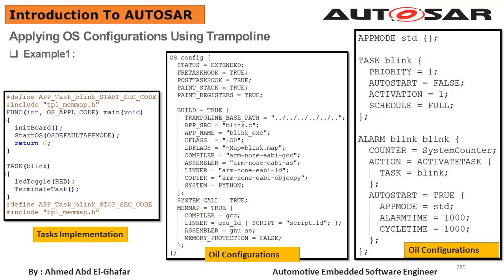If you try to activate a task which is in suspended mode, the RTOS will move the task into the ready state. And if you try to activate a task which is not in the suspended mode — meaning the task may be in the ready state, waiting or running state, or self-activation — the RTOS will do one of two scenarios depending on the current number of activations you have configured.